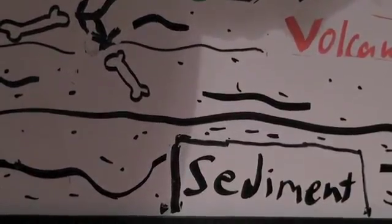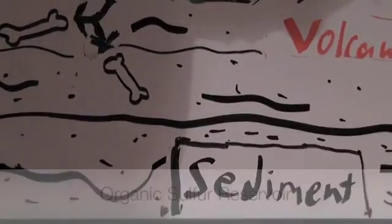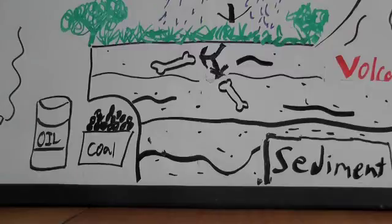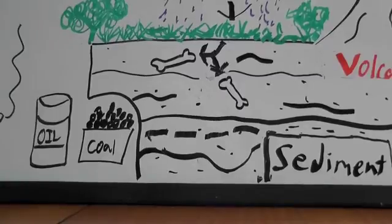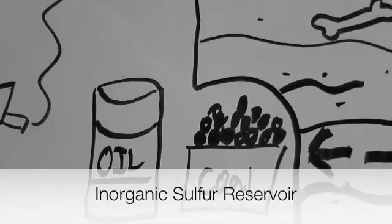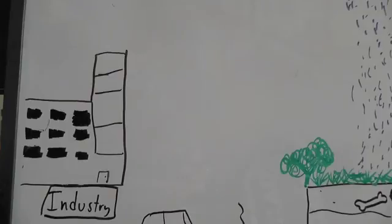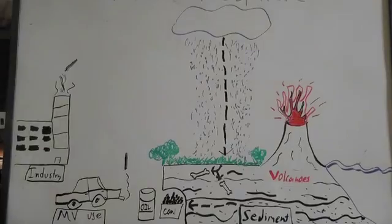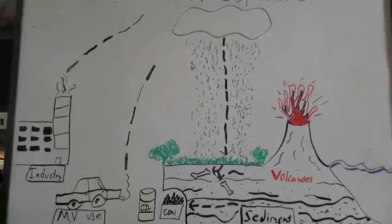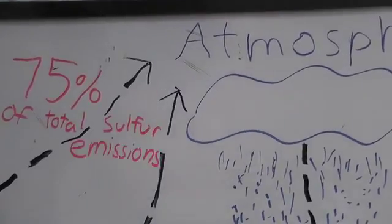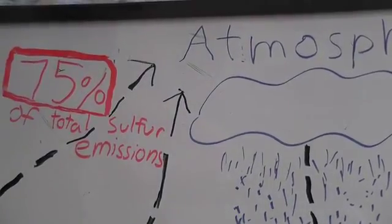Most sulfur is underground in the sediment and an organic sulfur reservoir. Therefore, sulfur is also a major part of fossil fuels. Refined fossil fuels made ready for human use are a large inorganic sulfur reservoir. When fossil fuels are consumed, sulfur is released back into the atmosphere. That is the most significant input of sulfur back into the atmosphere.